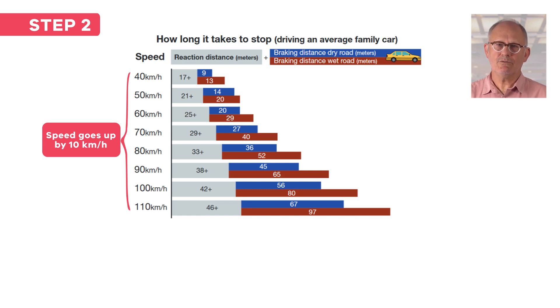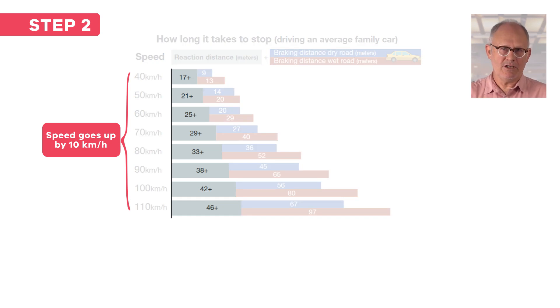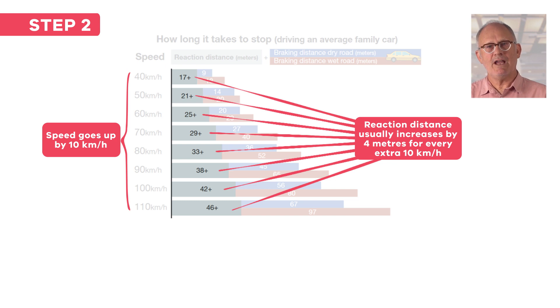When you look at the distance travelled when the driver is reacting, which is shown by the grey bars on the left, you can see that the car travels an extra four metres for every 10 kilometres per hour that the car travels, although in just one instance this increase is in fact five. So you will need to work out how much faster the car is travelling than 110 kilometres per hour, and then you will need to add four metres for each extra 10 kilometres per hour that the car is travelling.